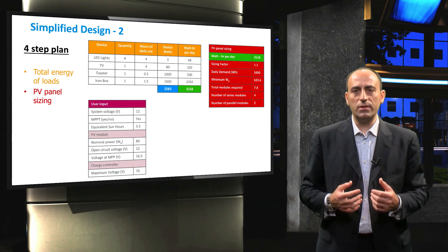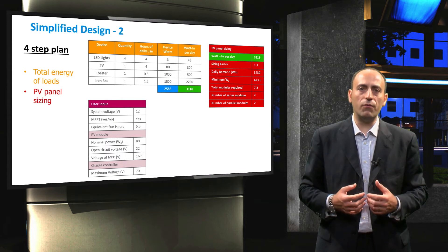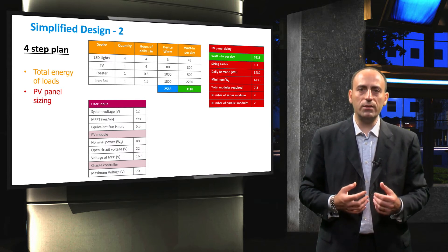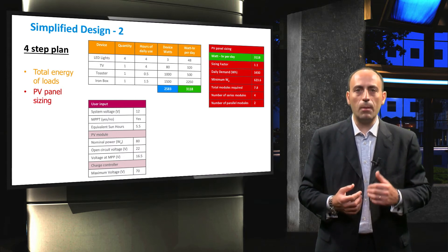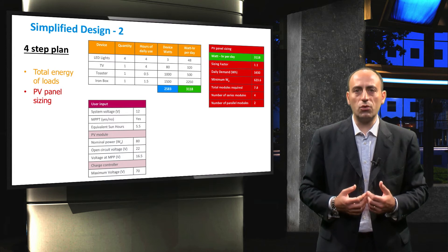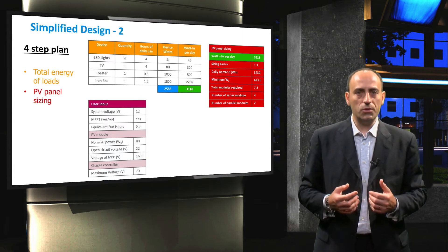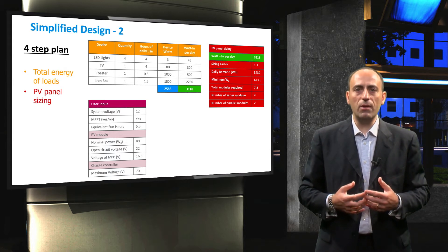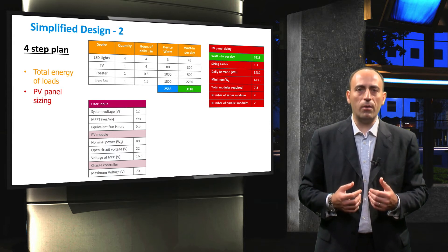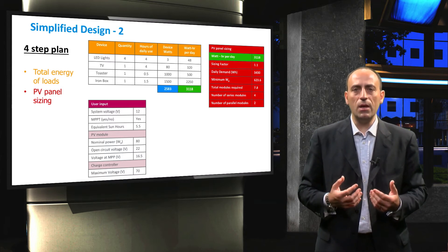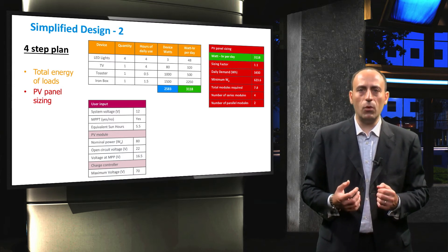To size the system, we first calculate the total number of required PV modules. This number is determined by dividing the above calculated minimum Watt-peak value by the nominal power of the PV module. We have also added the usage of a charge controller with an MPPT option. As you know, the MPPT decouples the load voltage from the PV array voltage, so that the PV array can be operated at its maximum power point voltage. Thus, the number of PV modules connected in series is calculated by dividing the maximum voltage of the charge controller by the MPP voltage of the PV module.